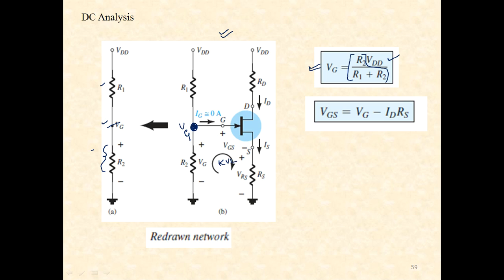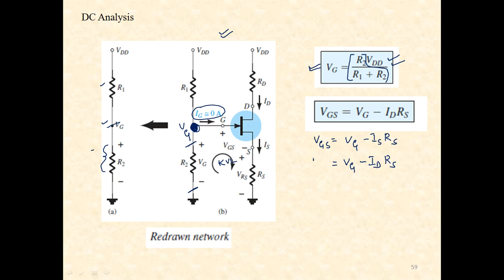Applying KVL: since IG equals zero for a JFET, there is no voltage drop across RG. The expression for VGS becomes: VGS equals VG minus ID·RS, where VG equals R2/(R1 plus R2) times VDD, and IS equals ID since IG is zero.